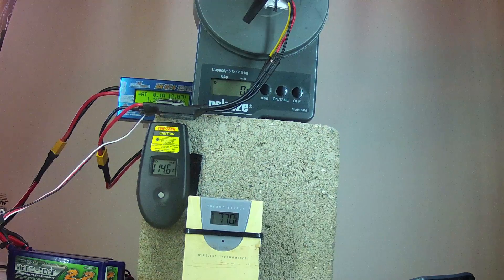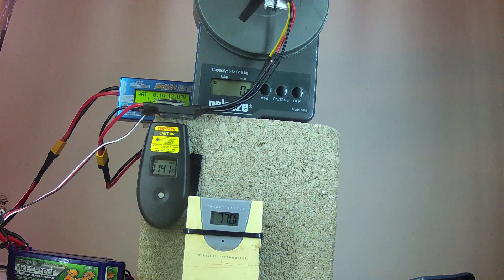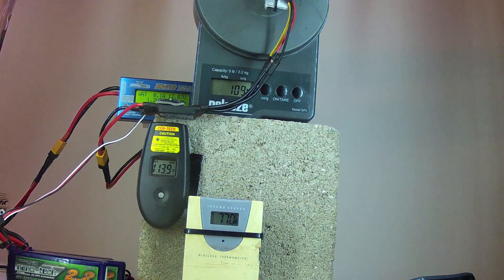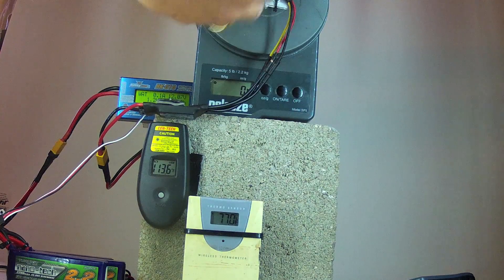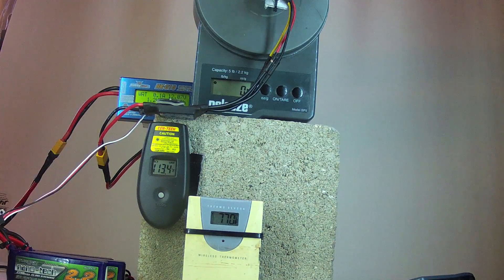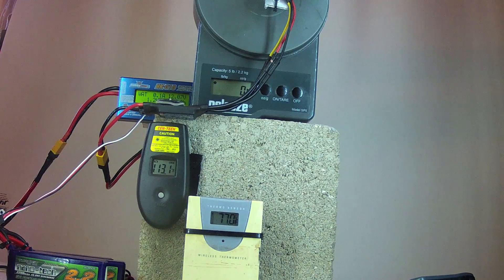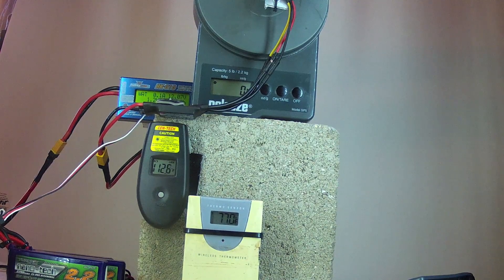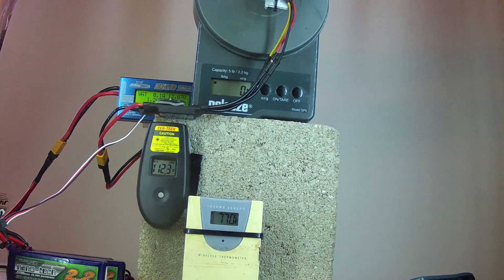Now let's try some different propellers. This is the same Turnigy 2200 kV motor with a master airscrew 6x3 prop. So same diameter, but less pitch than the prop we just tested. This should be better at lower speeds for better acceleration from a standstill, but won't be as efficient at higher speeds. I'll do a maximum thrust test and then I'll do the 100 watt grams of thrust test.